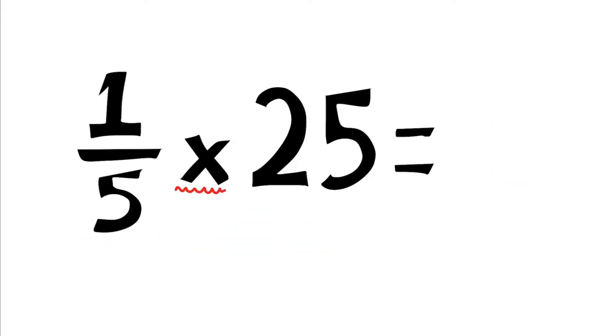A fifth of 25. You might already know the answer. Notice here, though, the of has gone. It's been replaced by the multiplication symbol. They mean the same thing. How many fives go into 25? Five. Multiply by the one. Equals five.